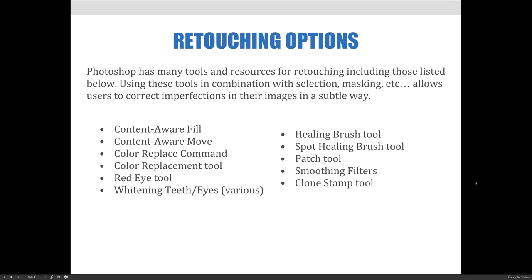Photoshop has many tools and resources for retouching, including content-aware fill, content-aware move, color replace command, color replacement tool, red eye tool, healing brush tool, spot healing brush tool, patch tool, smoothing filters, and clone stamp tool. Using any of these tools in combination with selections, masking, etc., will allow you to correct imperfections in your photographs in a subtle way. Basically, every tool in Photoshop can be used for retouching — it depends on your take on it and what you need to accomplish.